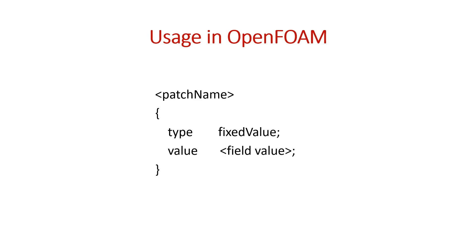So how do we use it in OpenFOAM? We write the patch name on whatever patch we want to give this fixed value, then write 'type fixedValue' and mention the value inside curly brackets. This is how we use fixed value boundary condition in OpenFOAM.